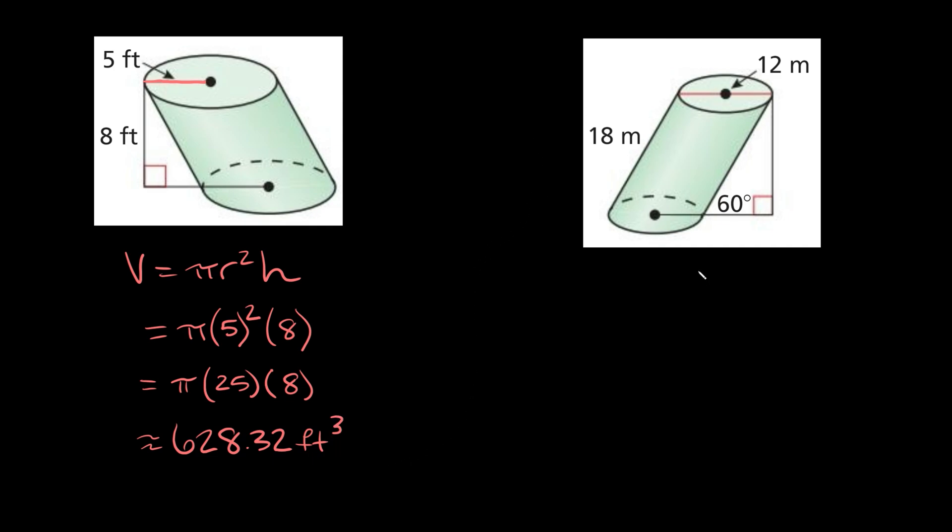Now let's do one more example here that's going to be a little bit harder because we're actually going to have to use some trig to solve this one. So here you can see we have an oblique cylinder. So we can always start at square one, which is just writing out our formula. So it's going to be the volume is equal to pi r squared times h.